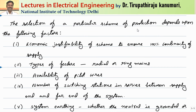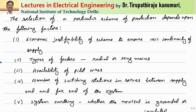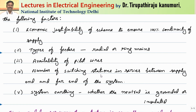The selection of a particular protection scheme mainly depends on the economic justifiability of the scheme to ensure continuity of supply. For low voltage systems, we cannot invest huge cost for circuit breakers, so we use HRC fuses, which can also provide sufficient overcurrent protection. Wherever proper investment is possible, we go for circuit breakers, which have advantages such as reusability. The next factor is whether the feeders are radial or ring main type, and the availability and cost of pilot wires.